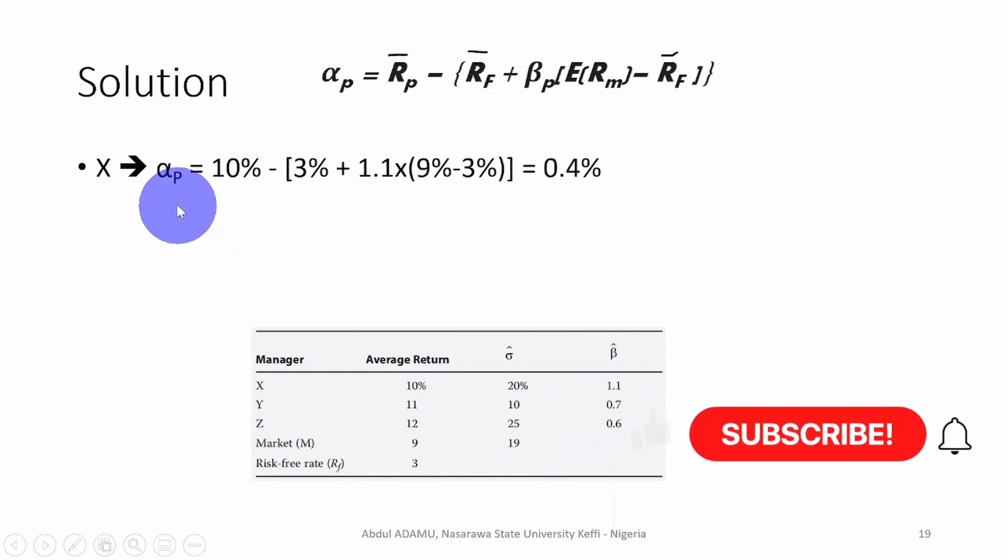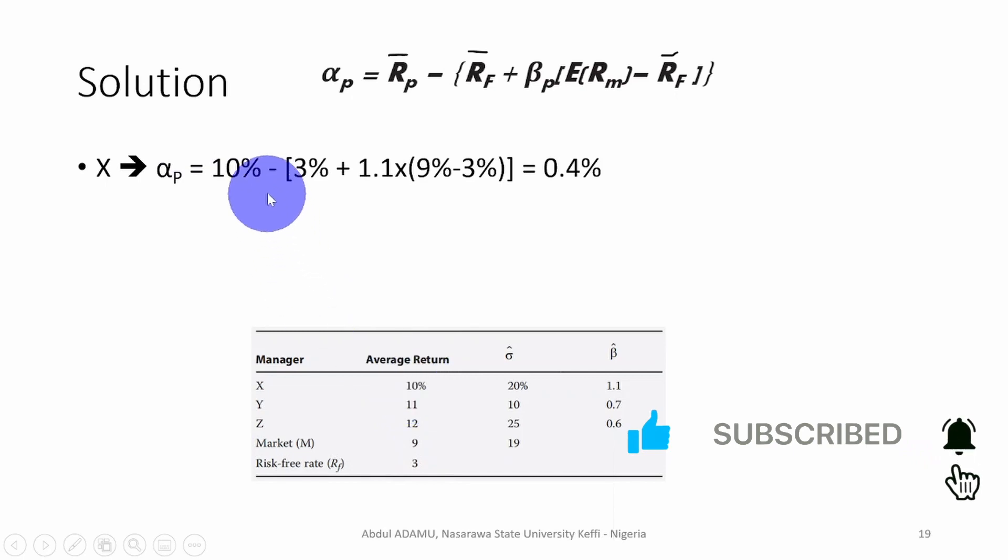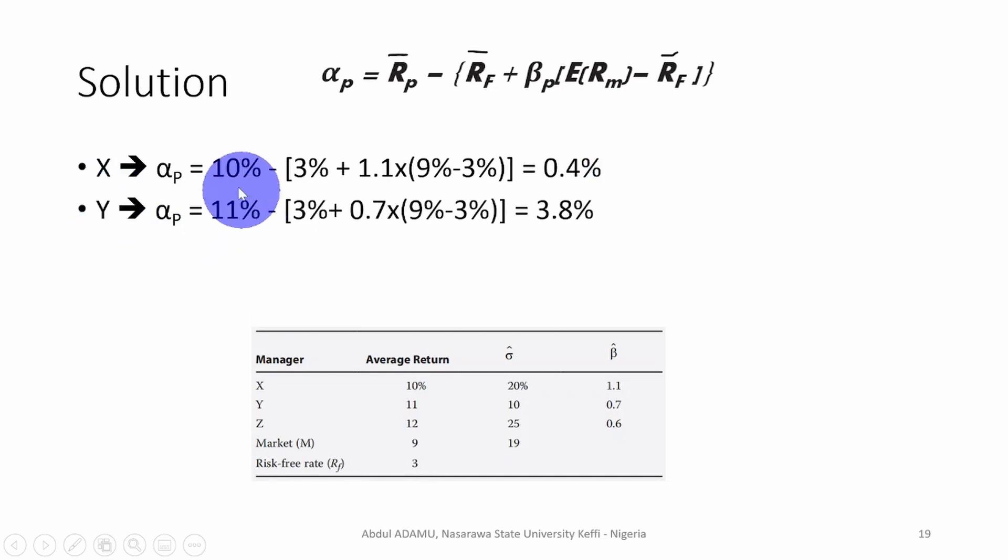So if we plug them in, the first one, the return of the portfolio is 10% minus the risk-free rate which is 3%, plus the beta is 1.1. We multiply it by the market risk premium, which is 9% minus the risk-free rate. Then once we do it, 10% minus that value, we have 0.4%, which is a positive value. Then for portfolio Y, we plug in the return of 11%, the beta is 0.7, and we have a Jensen alpha of 3.8%.